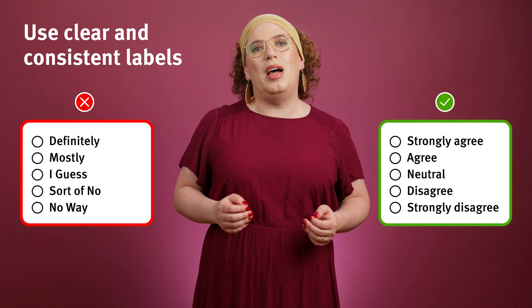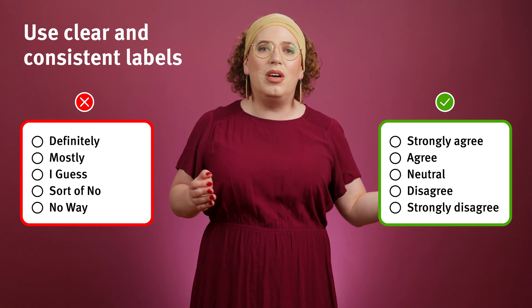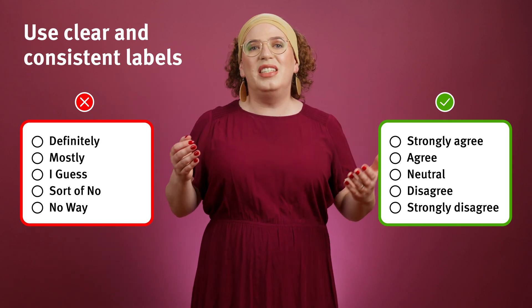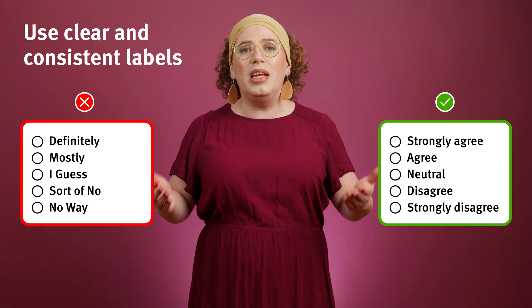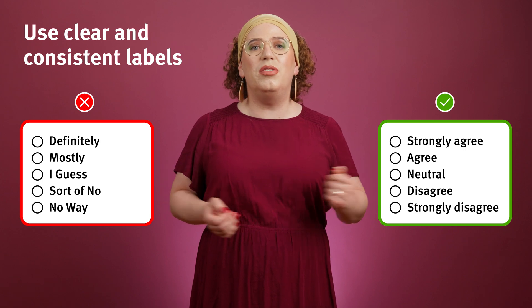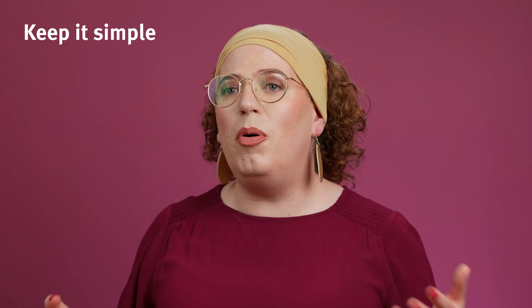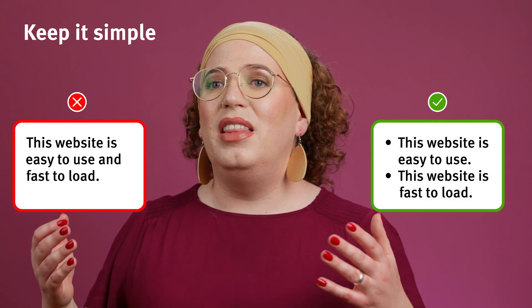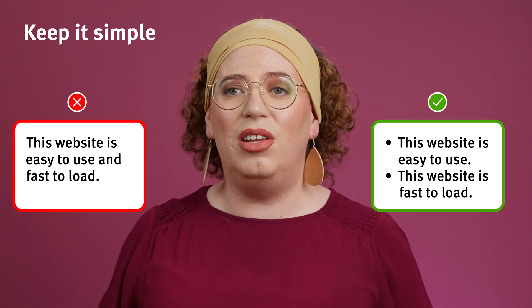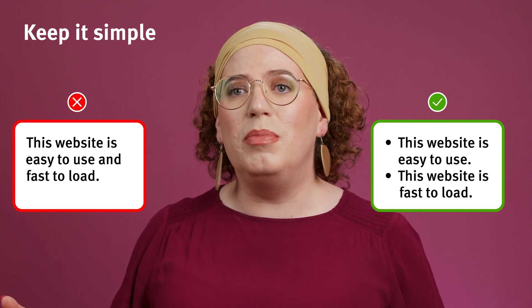When designing Likert scales, there are a few best practices to follow. Use clear and consistent labels — stick with standard response options like strongly agree, agree, and so on. This ensures consistency across surveys and makes it easier for participants to understand. Keep it simple: avoid overly complicated or double-barreled questions. For example, don't ask 'This website is easy to use and fast to load.' Split it into two items instead.